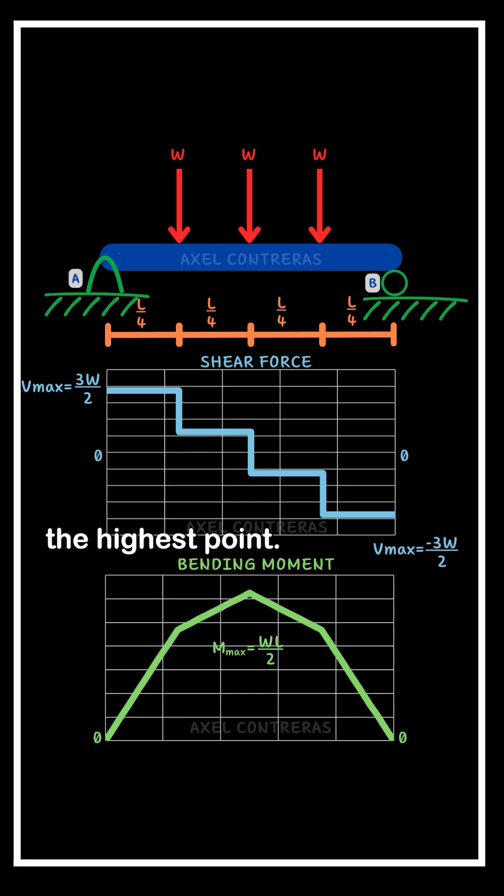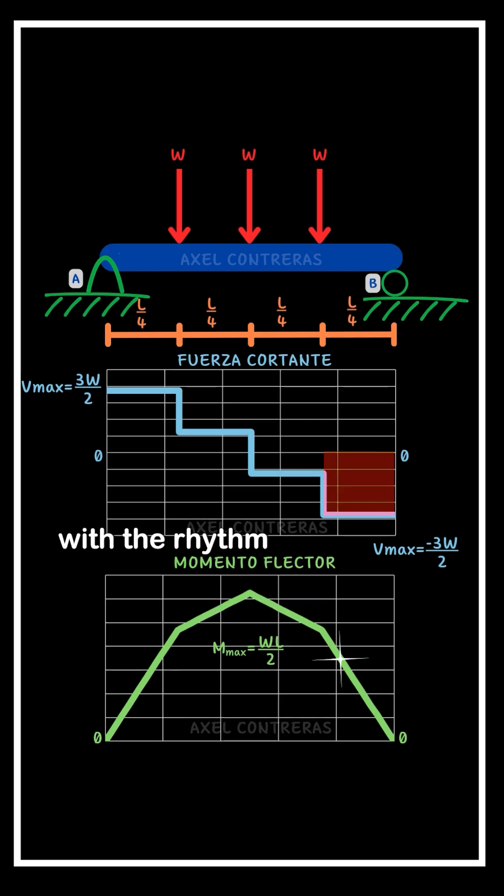It conquers the highest point once again at mid-span, WL slash 2. From there, it begins to fall, first gently, then faster, in sync with the rhythm set by the shear force, until it returns to zero.